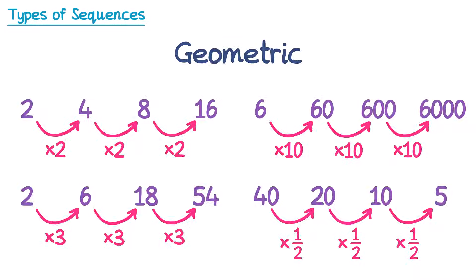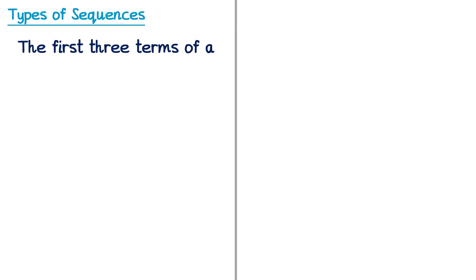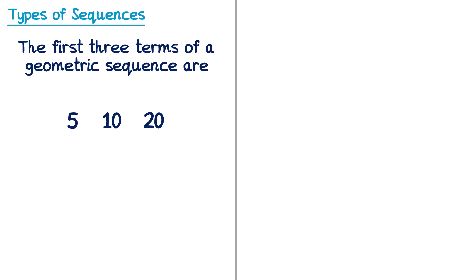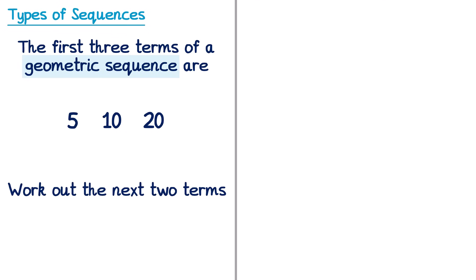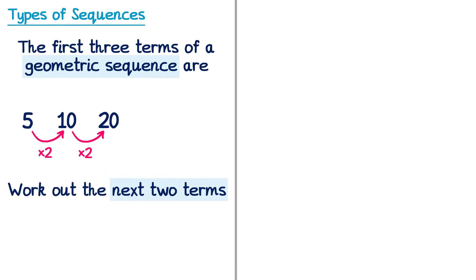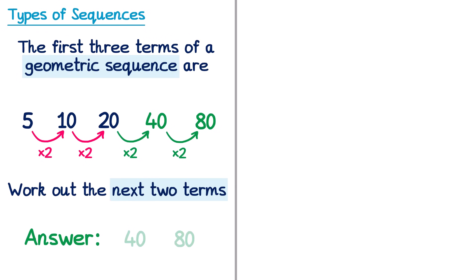Let's look at some exam-style questions on geometric sequences. The first three terms of a geometric sequence are 5, 10, and 20. We need to work out the next two terms. Since we're told it's geometric, we must multiply by the same number each time. From 5 to 10 we multiply by 2, and 10 to 20 we also multiply by 2. So we keep multiplying by 2: 20 × 2 = 40, and 40 × 2 = 80. The next two terms are 40 and 80.